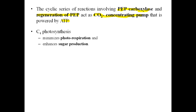The benefits of the C4 cycle: C4 photosynthesis minimizes photorespiration and enhances sugar production because these plants grow in warm climates and do not need photorespiration. Photorespiration was considered a wasteful process because it utilizes the ATP and NADPH energy generated in the light reactions without synthesizing sugars.